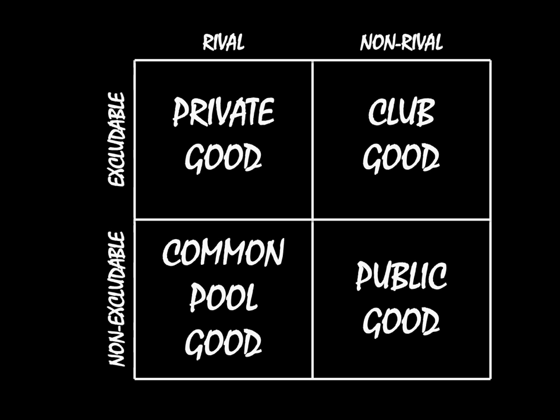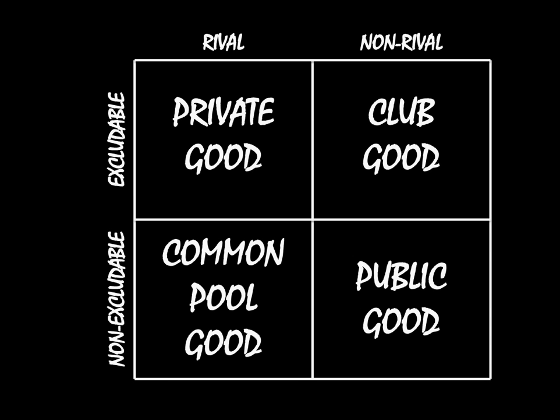Well, that gives us our table right here. We have rival-excludable goods as private goods, non-rival-excludable goods as club goods, rival-non-excludable goods as common pool goods, and non-rival-non-excludable goods as public goods.